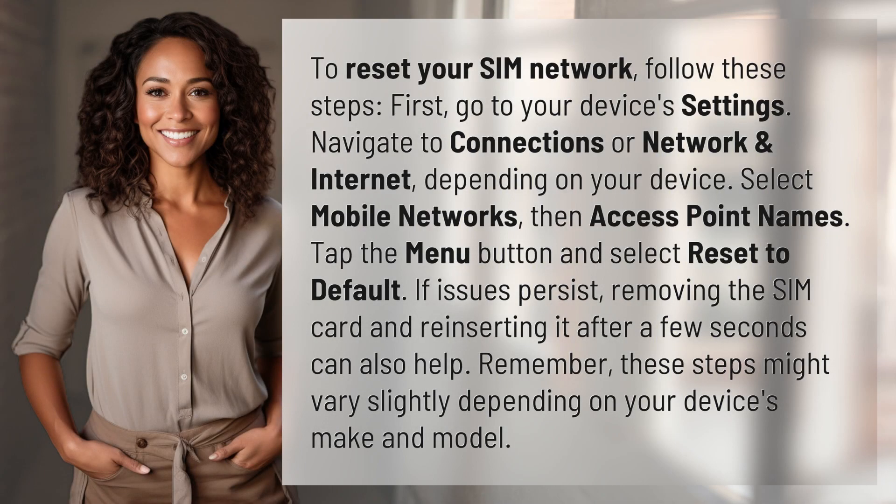To reset your SIM network, follow these steps. First, go to your device's settings. Navigate to Connections or Network and Internet, depending on your device. Select Mobile Networks, then Access Point Names.